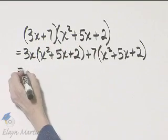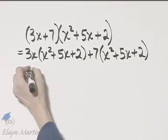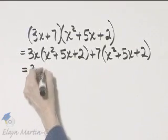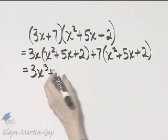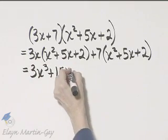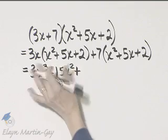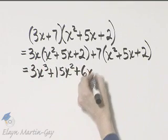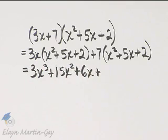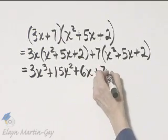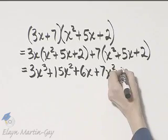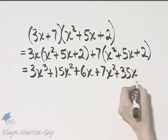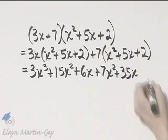Now let's use the distributive property. 3x times x squared, that's 3x cubed plus 3x times 5x, that's 15x squared plus 3x times 2, that's 6x. And then plus, now I'm multiplying 7 by each term of the trinomial. 7 times x squared, that's 7x squared, plus 7 times 5x, that's 35x. And then plus 7 times 2 is 14.